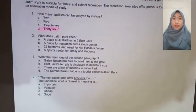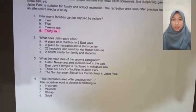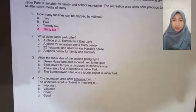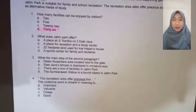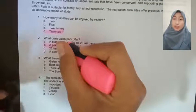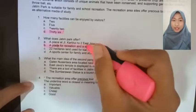The second question: What does Jatim Park offer? A. A place at Kota Wisata, B. A place for recreation and a study center, C. A 22-hectare land used for Kiai Hasan's house, D. A place for the sports center for family and students. Pada soal kedua ini, kita dapat menemukan jawabannya pada paragraf pertama, di mana ada kalimat 'Jatim Park, direction, as well as a study center.' Jadi, jawaban kita adalah B: a place for recreation and a study center.